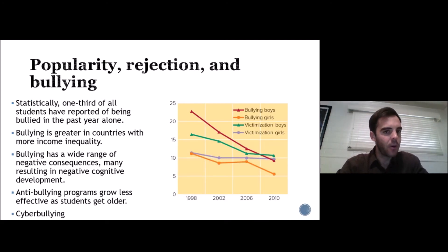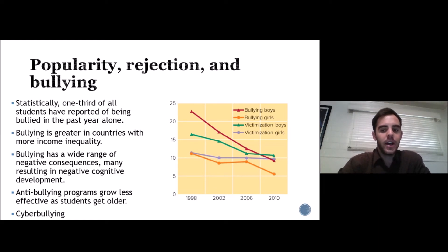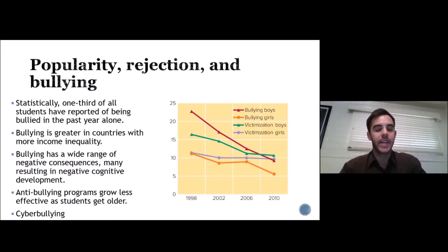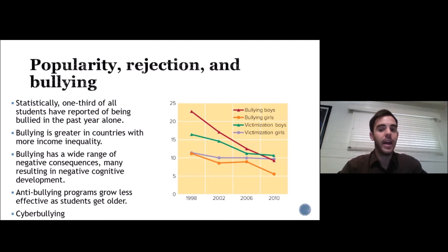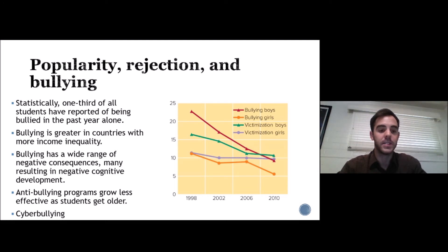Bullying is a very rampant trend, though it has started to decrease over the years — bullying on campus is not as prevalent as it was in the 1990s. However, that's because cyberbullying is taking up more of a precedence now. Adolescents are able to go on the internet and social media, do so anonymously, and send very vulgar and degrading messages to their peers. This leads to many negative consequences, including negative cognitive effects, and suicide rates are very high because of bullying and cyberbullying.